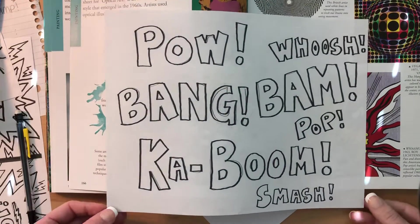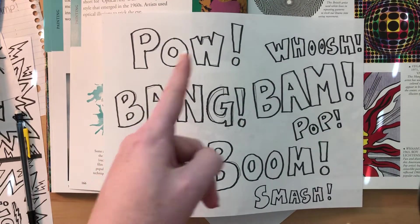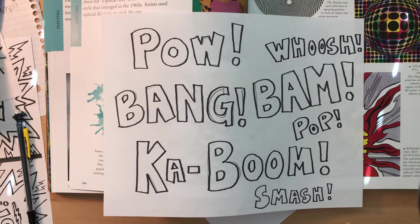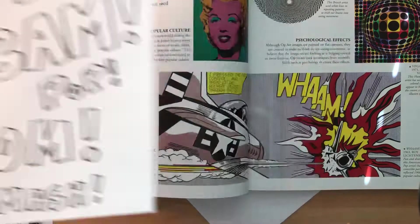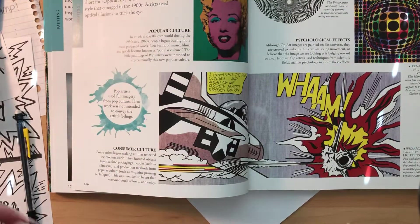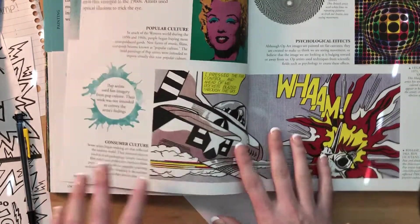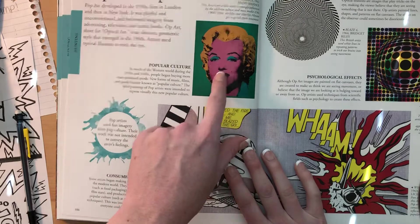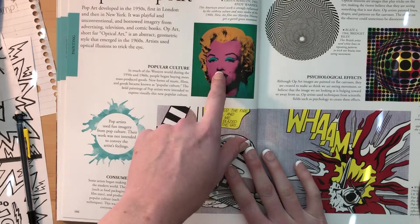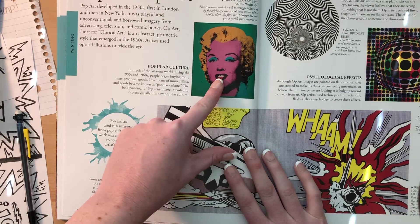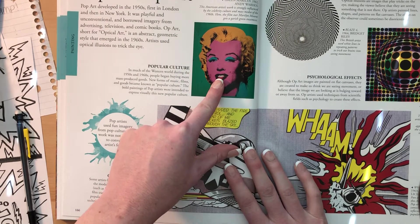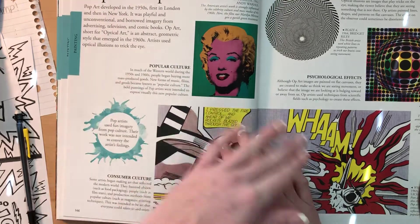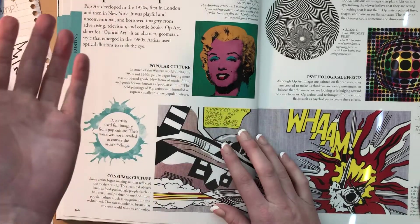Here are a couple of examples of words he used: pow, whoosh, bang, bam, pop, kaboom, smash. He used words like that in his artwork that really popped. So pop art is when we see images of people, animals, or movies — things that we recognize, things we see all the time that are really popular — and we use those in our artwork with really bright, bold colors.